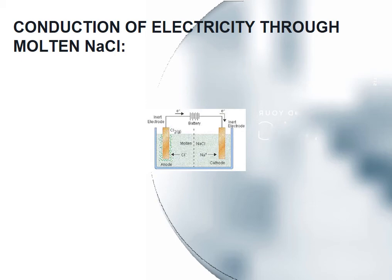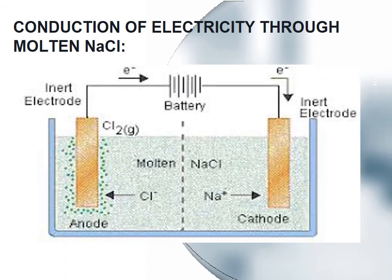In the figure showing conduction of electricity through molten sodium chloride — when sodium chloride melts, the sodium and chlorine ions are free to move throughout the molten salt. Chlorine becomes negatively charged and sodium becomes positively charged. When voltage is applied, sodium positive ions move toward the negative electrode (cathode), and chlorine negative ions move toward the positive electrode (anode). This movement of ions is responsible for the flow of electricity between the electrodes in the external wire, and as a result, electricity is produced.